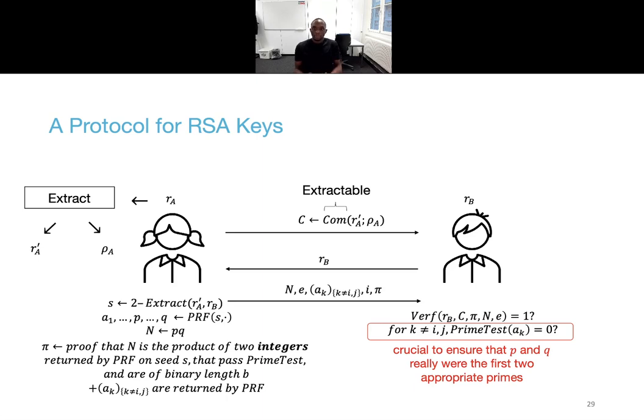Bob first verifies that the proof is correct, including the part that the other values sent by Alice were indeed returned by the PRF on seed S. And of course that this seed was extracted using Bob's randomness and Alice's. And then also he verifies that none of the other values AK passed the prime test algorithm. This is crucial to ensure that P and Q were really the first two primes that Alice found that passed the test. And Bob can then be convinced that Alice or rather her computer did not bias the key generation process.